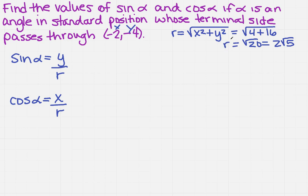Well, I know y and I know x, so I just plug in. I'm going to get minus 4 over 2 square root of 5, and down here minus 2 over 2 square root of 5. Now remember, you can't have a radical in the denominator. You're going to have to rationalize these.